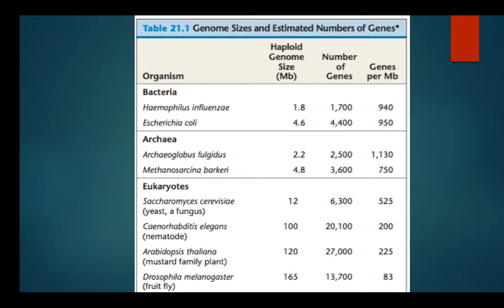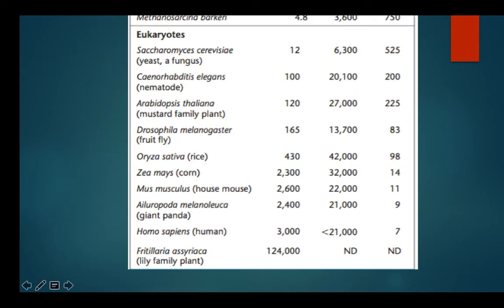I want to talk about a problem with the human genome — the number of genes. Looking at different organisms: E. coli has 4,400 genes, fungi have 6,000, nematode worms have 20,000, a mustard plant has 27,000, Drosophila has 13,000, rice has 42,000, and corn has 32,000 genes. There are a lot of genes here. Humans have 21,000 genes — we have lots of DNA and not a lot of genes. We have three billion bases in our genome and only 21,000 genes.